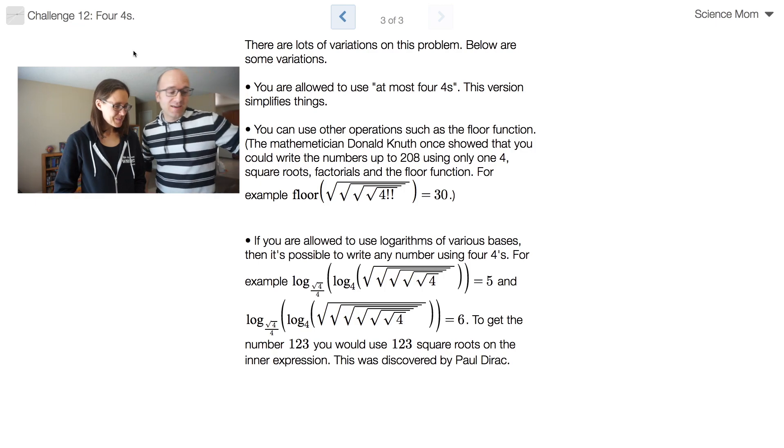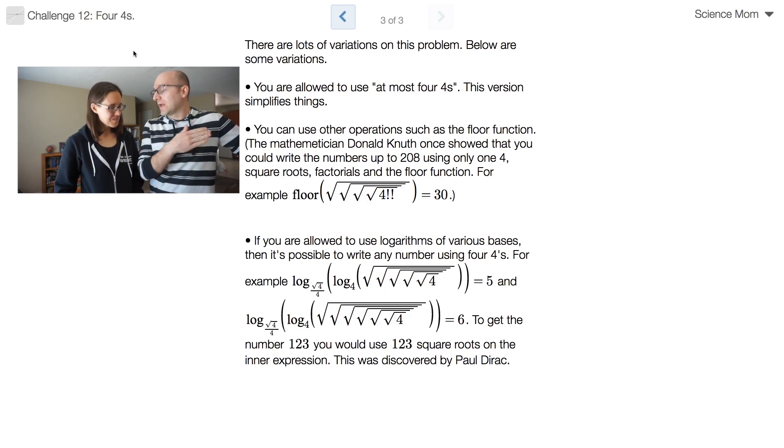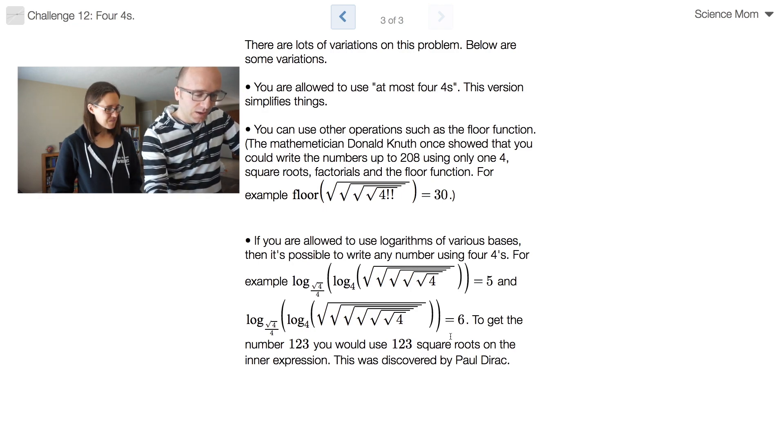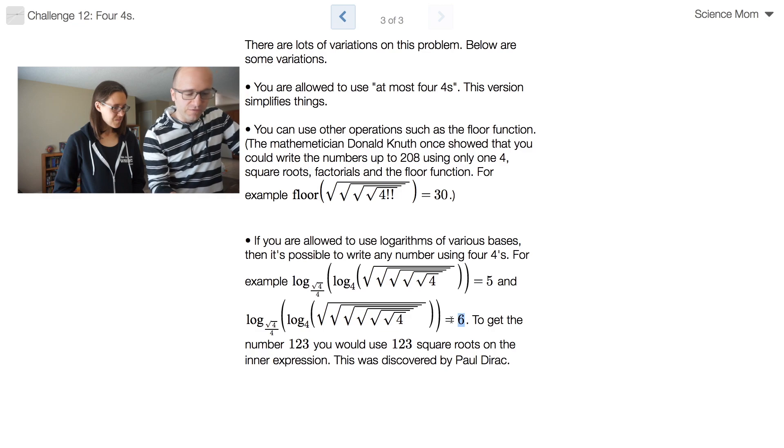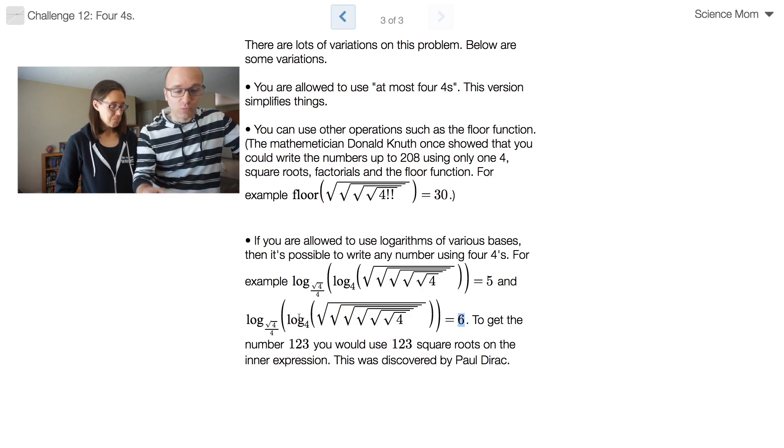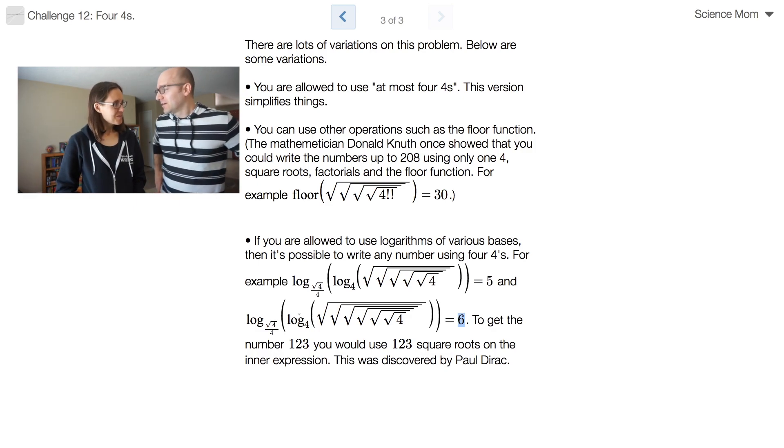Paul Dirac came up with the solution in general. If you're allowed to use logarithms where you can put the number four in the base, then you can get any number. And he actually came up with a method for doing so. I've got one displayed here. So for example, to write the number six, what we would have to do is use an expression involving six radicals. If I wanted to write the number 123, I would write pretty much the same thing except we could use 123 of those radicals and it would work every time. So in truth, this is a problem that's been fully solved. But I didn't expect you to come up with that in three minutes.